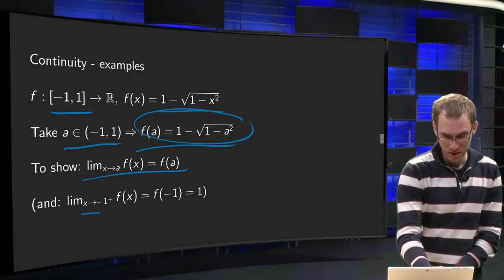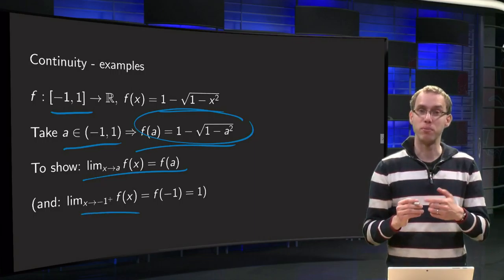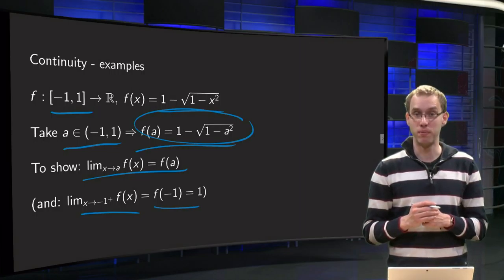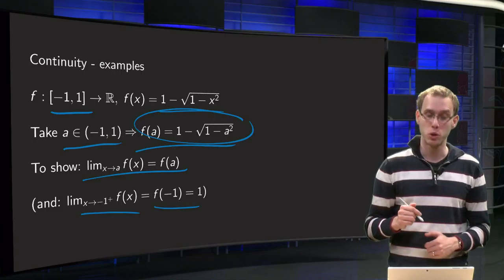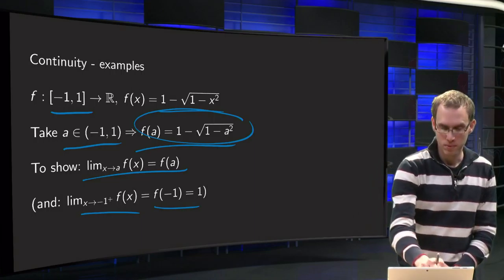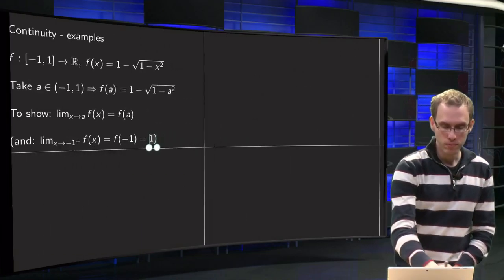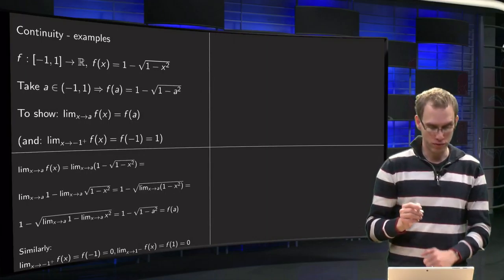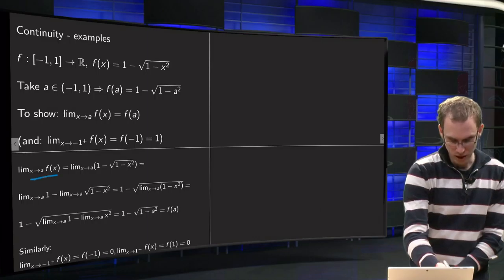And we also have to do both boundary points, of course, which means that if we go to minus 1, we can only approach minus 1 from the right. So limit x to minus 1 from the right, f of x has to be equal to f of minus 1, which equals 1.